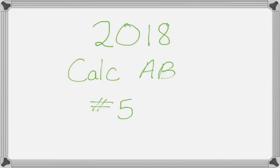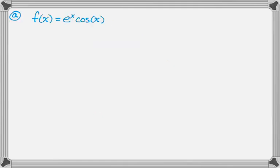Okay, in this video we are going to talk about number 5 from the 2018 Calc AB exam. And we're just given a function and asked a couple things about it. So here is the function. It's e to the x times cosine of x.